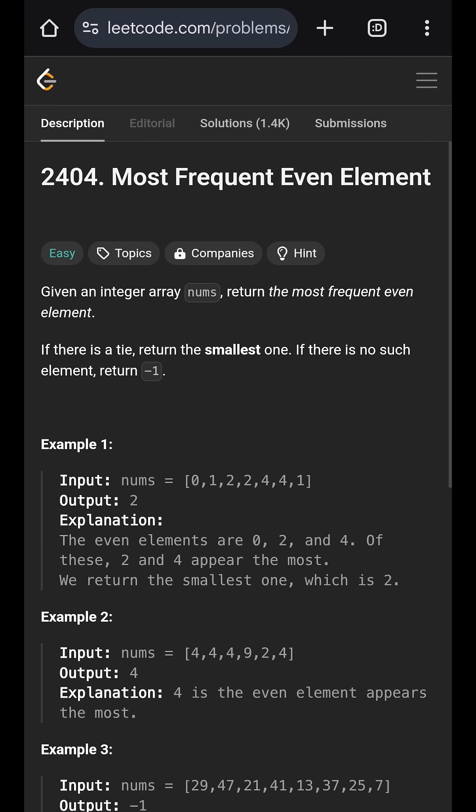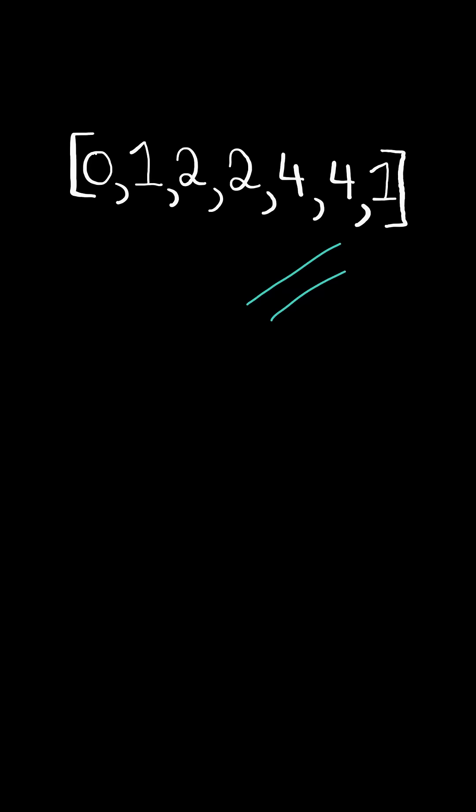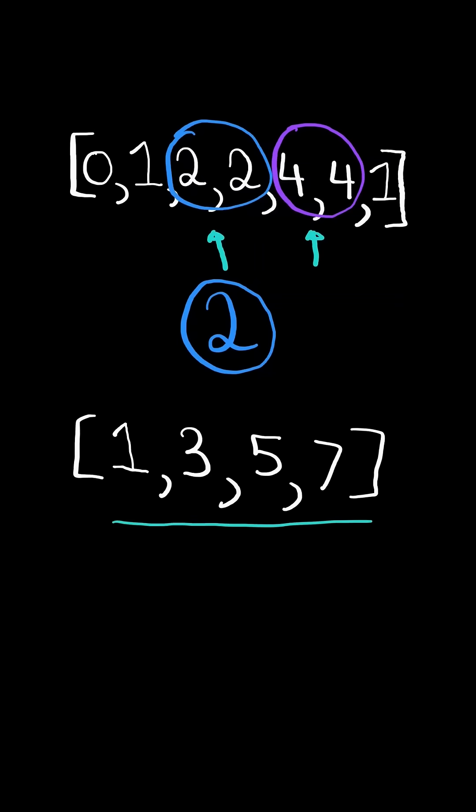Most frequent even element. Given an integer array, return the most frequent even element. If there's a tie, then we return the smallest element. If there are no even numbers in the array, then we return negative one.